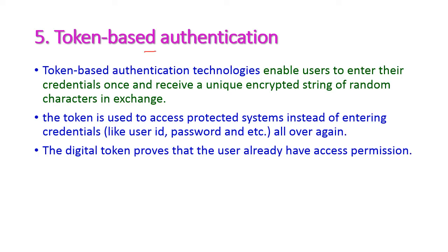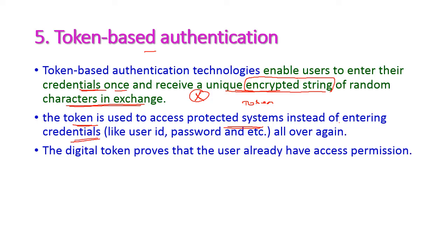Token-based authentication enables users to enter their credentials once and receive a unique encrypted string of random characters in exchange — this is called a token. This token is used to access the protected system instead of entering all credentials (user ID, password, and other details) again and again. Once entered, the system creates an encrypted text called a token. The digital token proves that the user already has access permission.